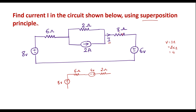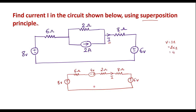The 8 ohm is connected again in series, and here we have a 6 volt voltage source. So this is I, which we are supposed to calculate. In superposition theorem, we have to consider one source at a time and find the individual current.